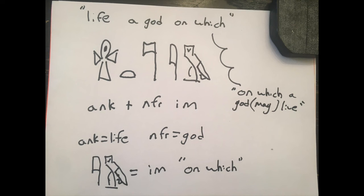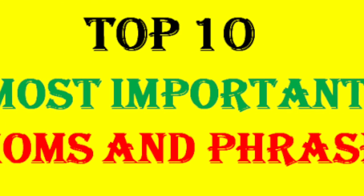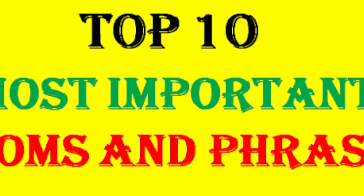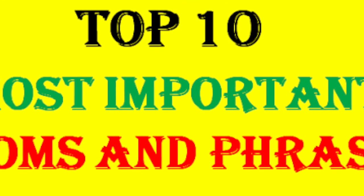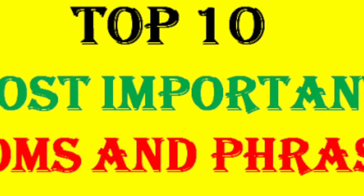Now putting it all together with both phrases — which you will see connected a lot, and when you see one you'll sort of see the other — it's a good idea to memorize these phrases because they flow into each other: 'everything good and pure on which a god lives.' You'll see that a lot.